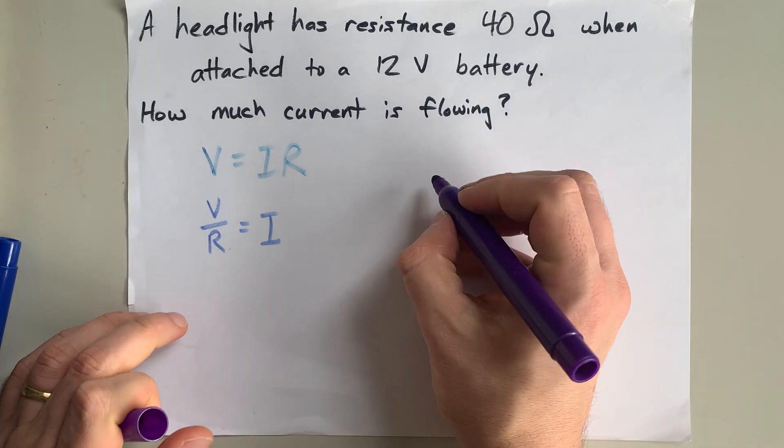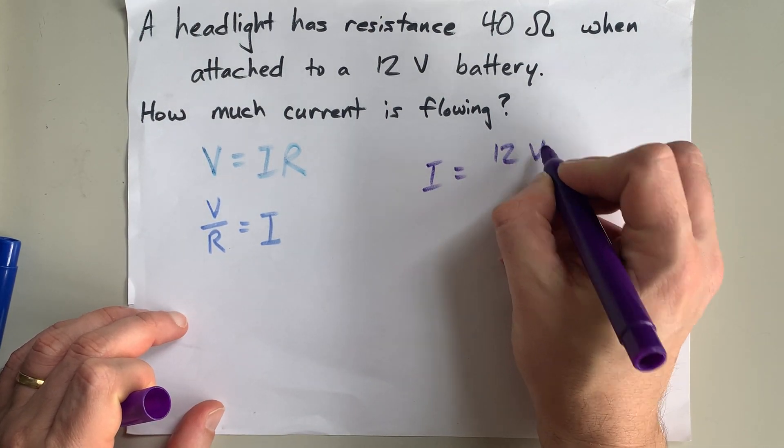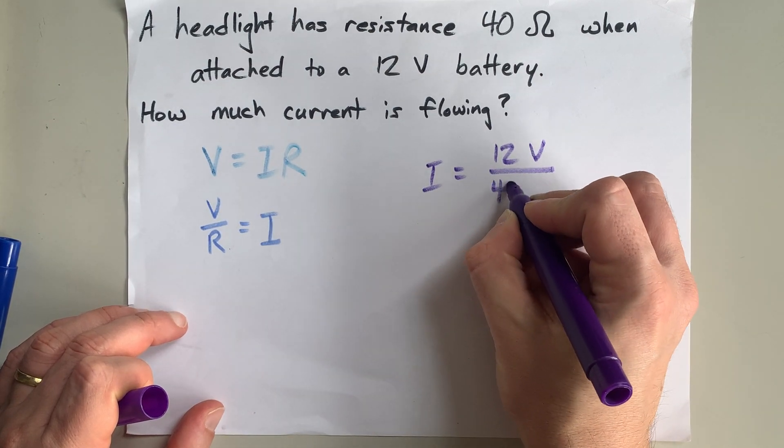So, in this case, my current is going to be 12 volts divided by 40 ohms.